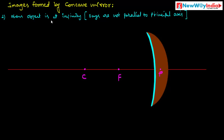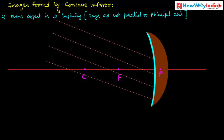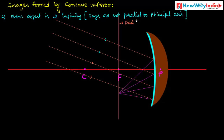The second case: when the object is placed at infinity but the rays are not parallel to the principal axis. These rays coming from infinity are incident on the concave mirror. After reflection, they meet at a point which is on the focal plane. This convergent point is on the focal plane, and the image is formed here.